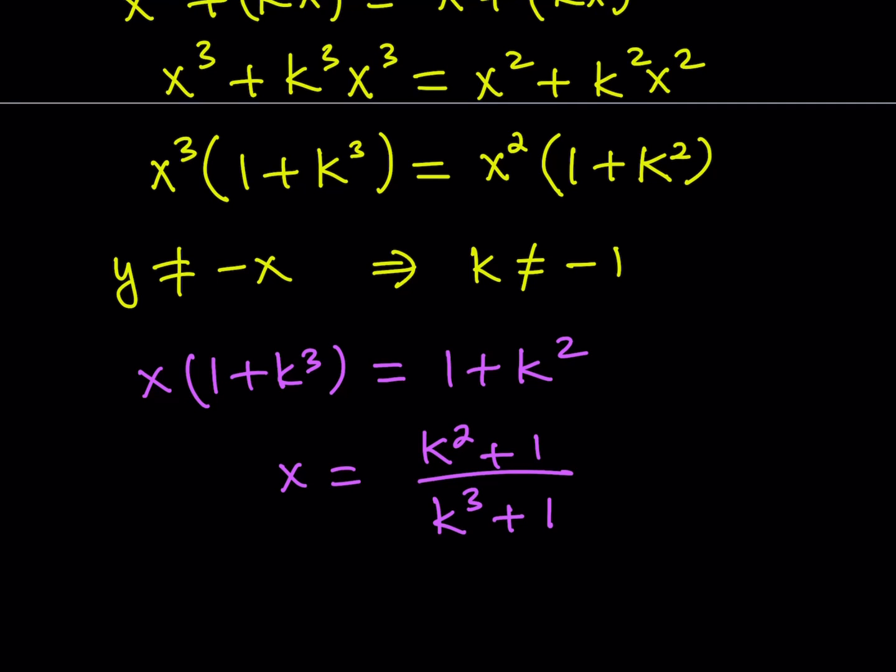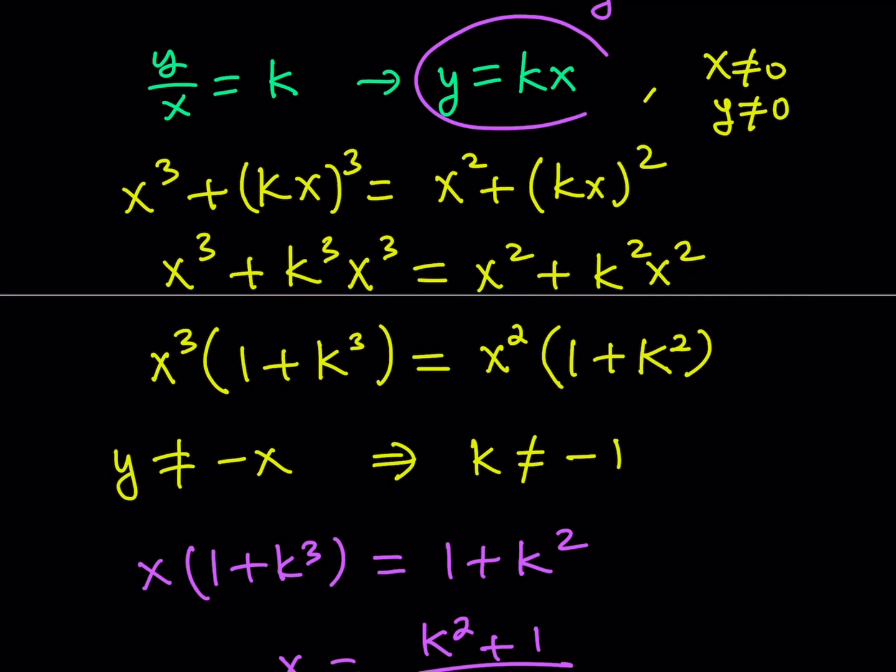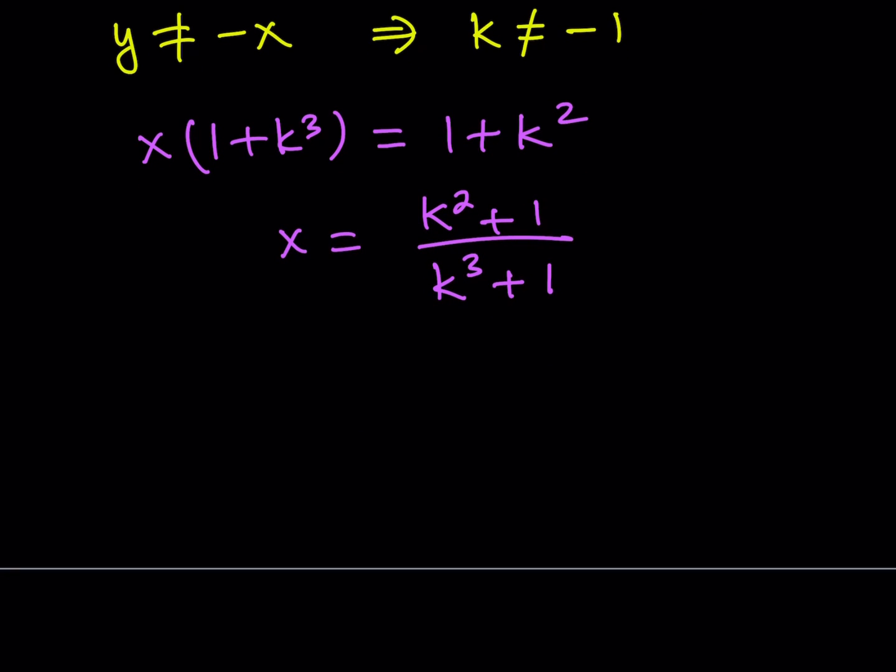So now, we have a value for x, but what about y? Well, remember, when we started the substitution, we assumed that y can be written as k times x. So, since we have a value for x, we can just go ahead and multiply this by k to get the value for y. So, if you go ahead and multiply this by k, that's going to look like k cubed plus k divided by k cubed plus 1. This basically brings us to the end of this video.